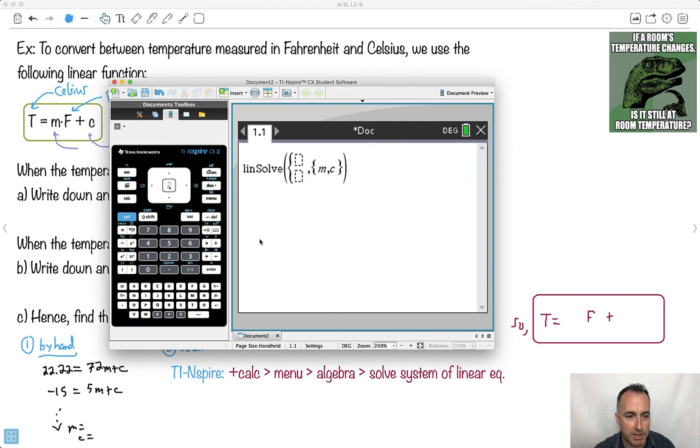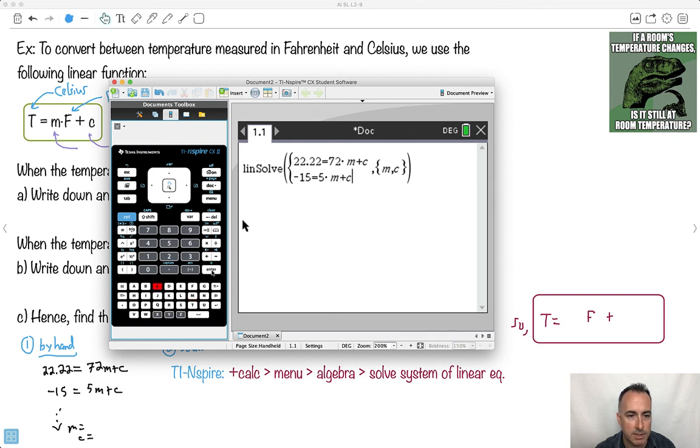Now it says to put in my equations. So 22.22 equals 72 times—don't forget the times symbol, sometimes it'll make a mistake if you didn't do that, so it's actually kind of important. I've forgotten a few times and it got really confused and said it couldn't do it. So -15 equals 5 times m plus c. And I say do it. And notice it told me what m is. It told me m is 0.55, let's just say, or we'll say three significant figures, 0.556.